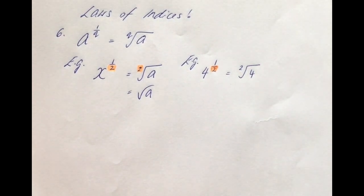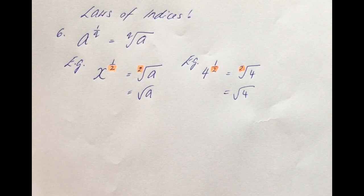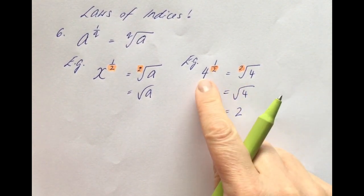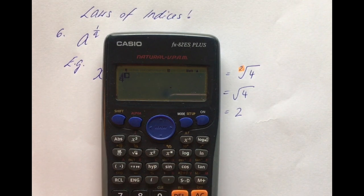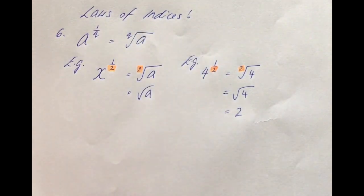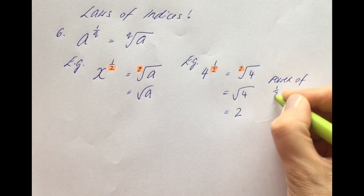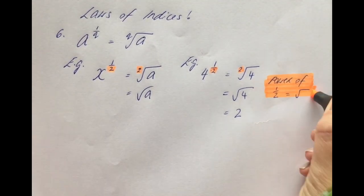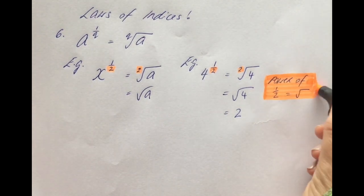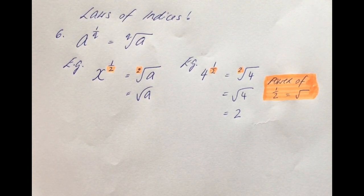For a numerical example: 4 to the power of a half. We have a fraction, so it's a root; the denominator is 2, so it's the square root of 4, which is 2. You can check on a calculator: 4 to the power of one over two gives 2. A power of a half is always equal to the square root — that is a really important and common one that students often trip up on. Any power of a half is always equal to a square root.